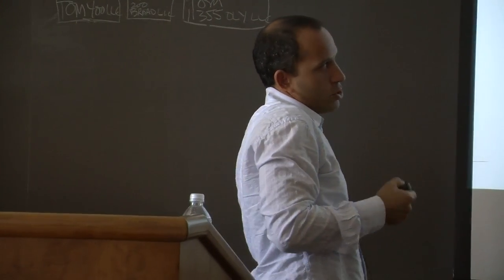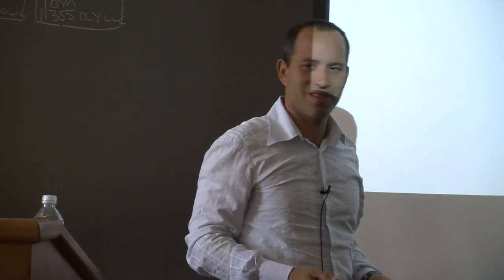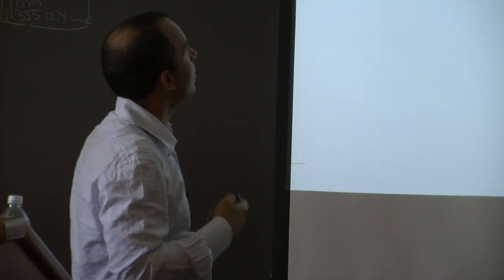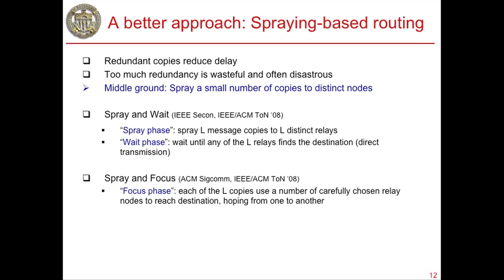Attempts to reduce redundancy in flooding suffer from the same shortcomings. The solution is spraying-based routing: redundant copies reduce delay, but too much redundancy is wasteful and often disastrous. The middle ground is to spray a limited number of copies — not just one path, not a full flood, but perhaps three to five parallel paths trying to reach the destination.